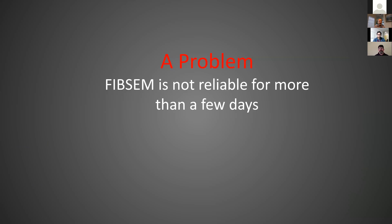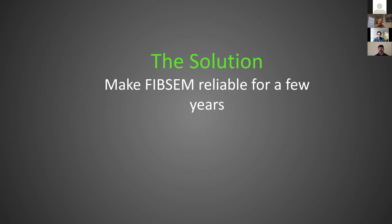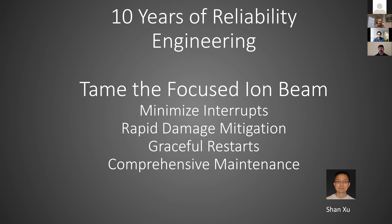FIB-SEM was not reliable for more than a few days, so we had to think deeply and apply all our physics knowledge. The solution: make it reliable for a few years. Sean Zoo is the hero here — he optimized these machines to achieve a very high degree of reliability, which is no small task. Countless frustrating and sometimes amusing things interrupted operation. He minimized interrupts; even if something happens we can restart the machine gracefully without losing data, for example if a pump blows up.